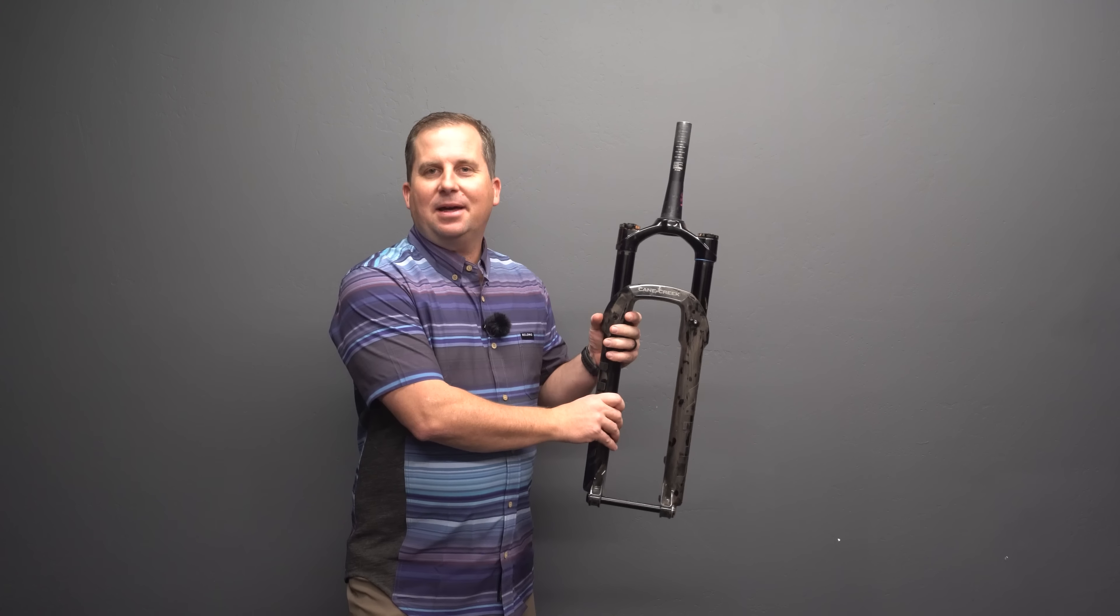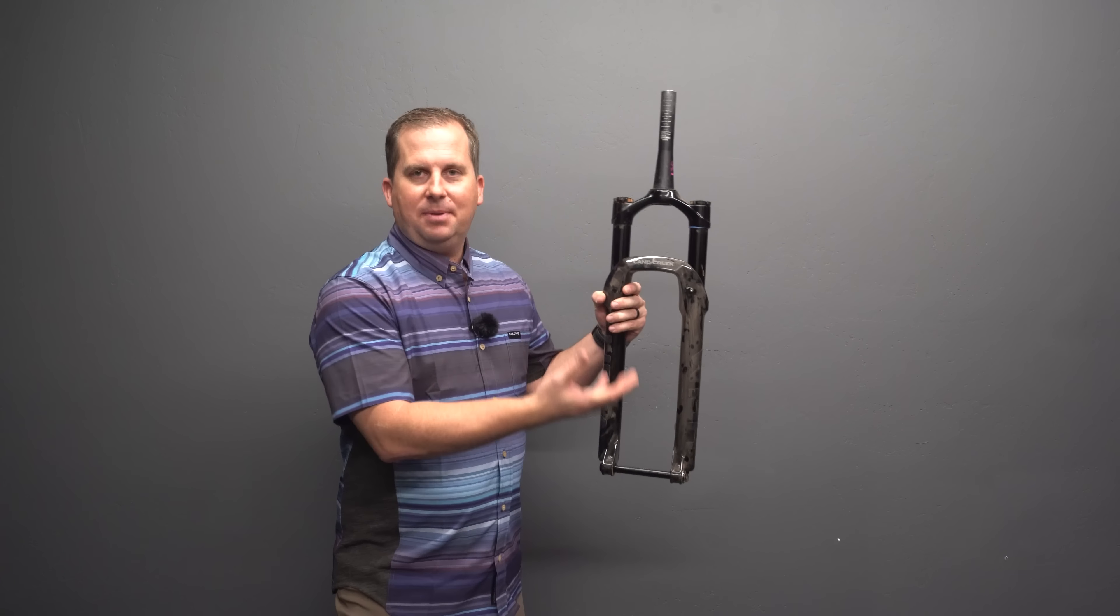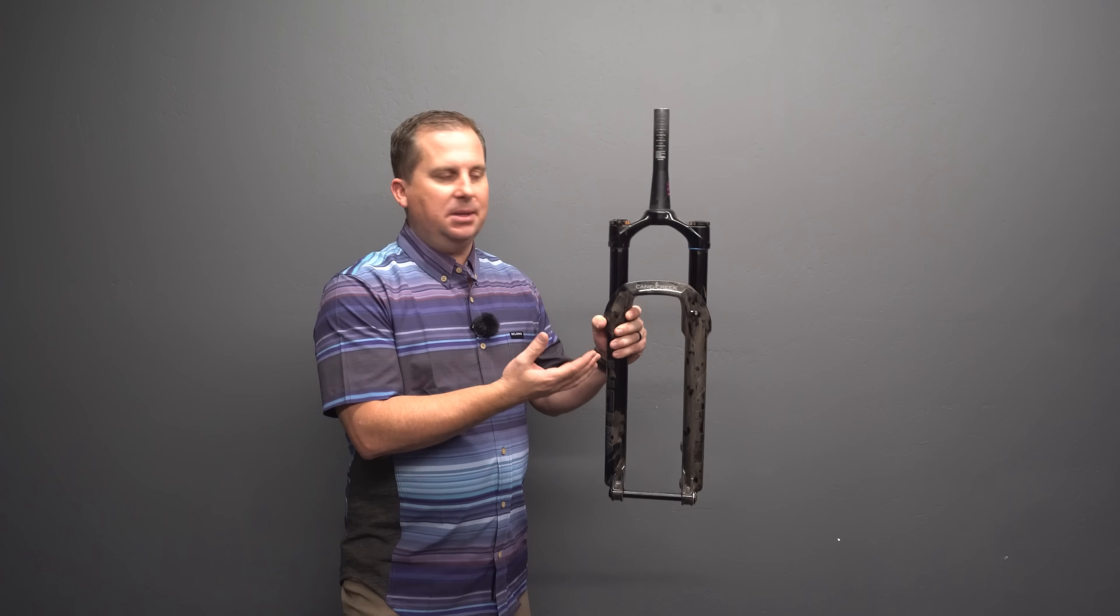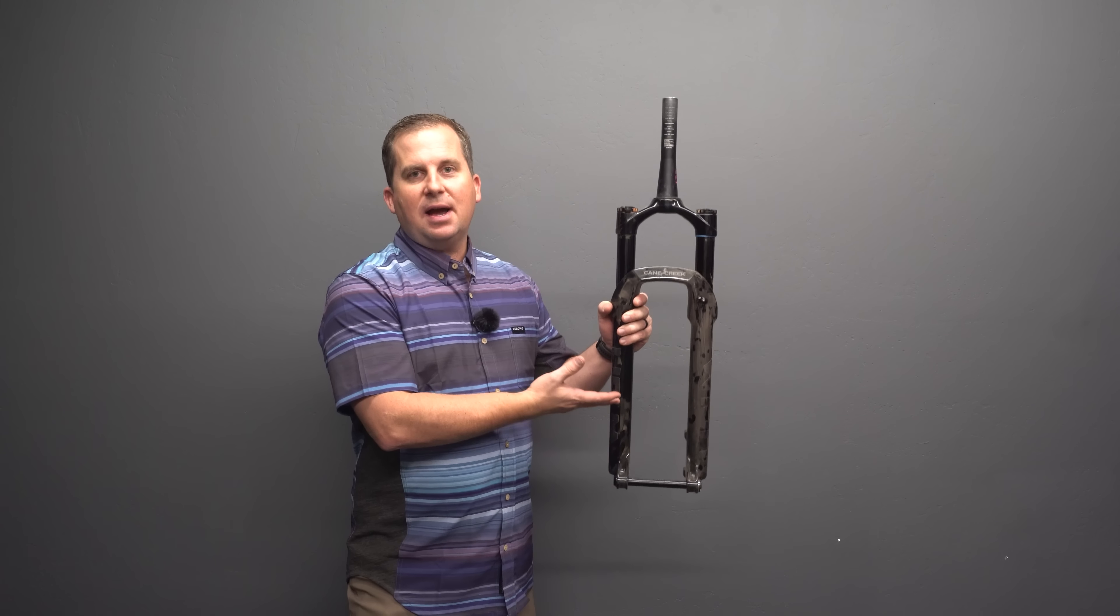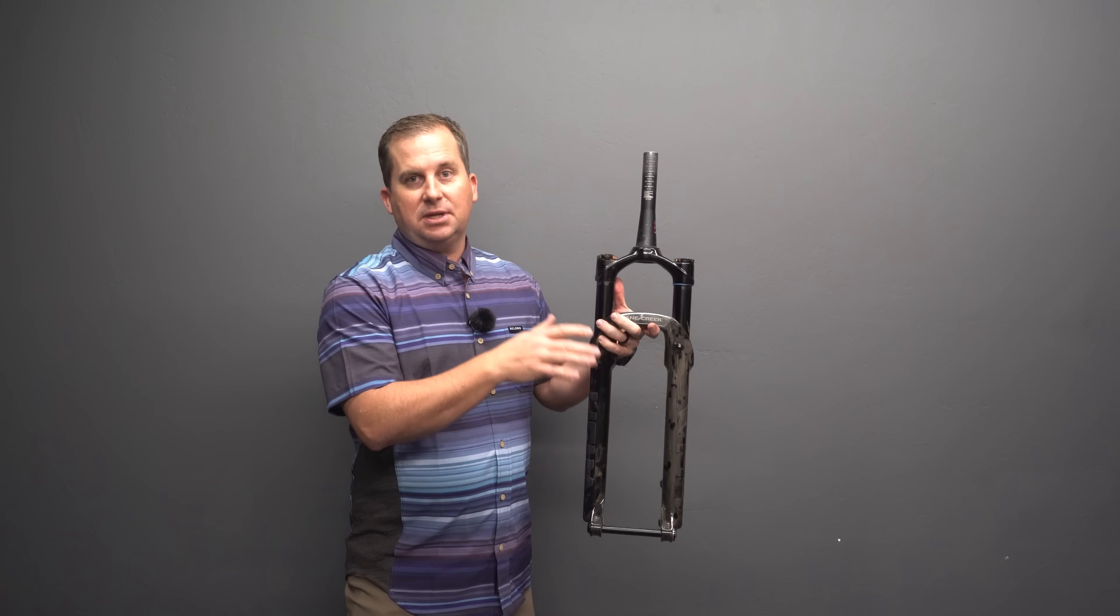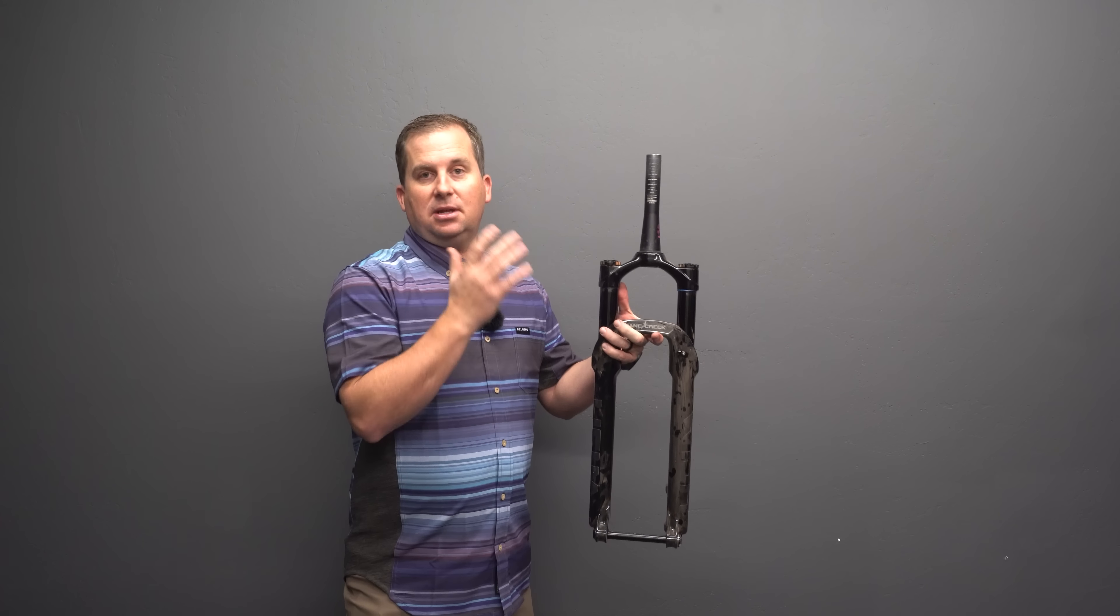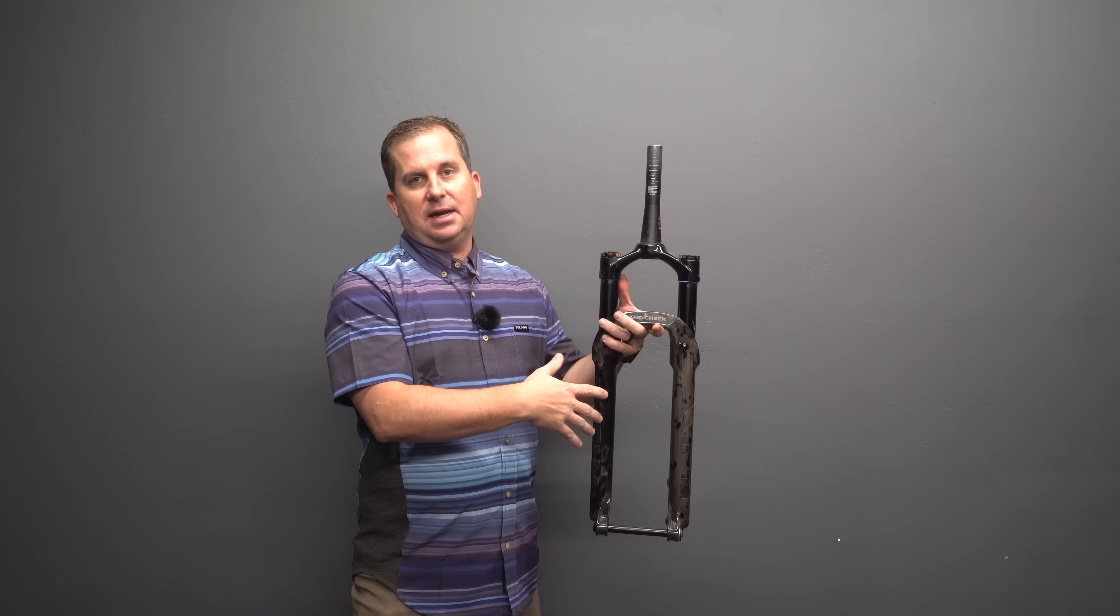My all-time favorite fork is the Cane Creek Helm Mark II. I'm not affiliated with them. I'm not paid to run their products. I just really love them. Easy to adjust travel in them. They're heavy though. They weigh between a Fox 36 and a 38, but I just love the performance.